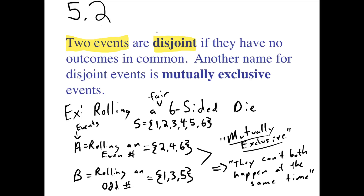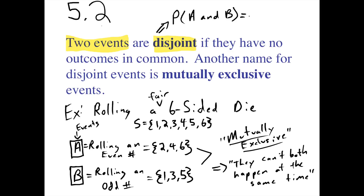If we have two disjoint events and we think about the probability of both happening at the same time — that is, the probability of A and B — that probability is always going to be zero, because by definition they can't both happen at the same time.